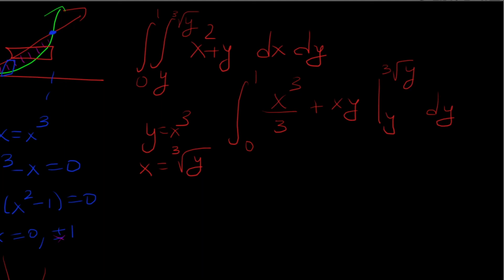So first I'm going to plug in cube root of y. But if I plug in cube root of y for x I get the cube root of y cubed which is just y. Then I'm going to divide that by 3 plus if I plug in x equals cube root of y I get y to the 4 thirds. And I'm subtracting when I plug in x equals y, so that's y cubed over 3 plus y squared.